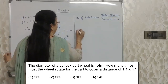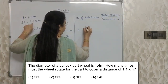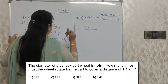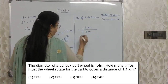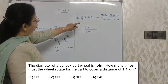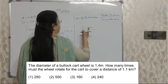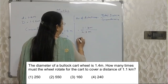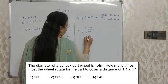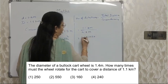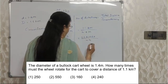Now, number of rotations we need to find out. Total distance is 1.1 kilometres, and circumference is 4.4 metres. But kilometre here and metre here — we cannot go ahead with the division. We need to convert this kilometre into metres. So 1.1 into 1000. Then it will be converted into metres. 4.4 is in metres anyway.